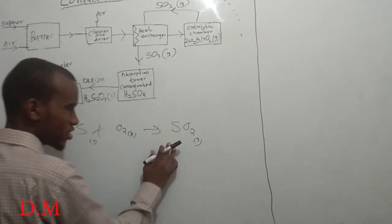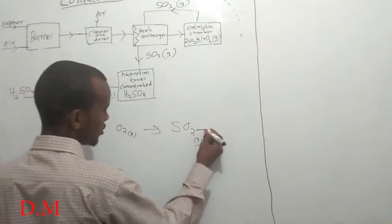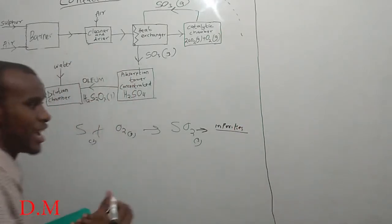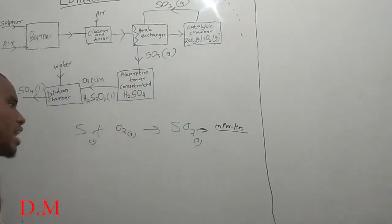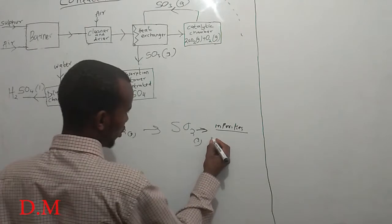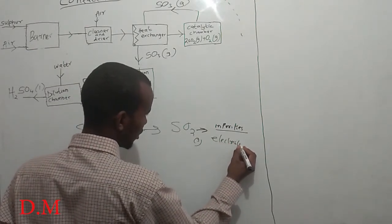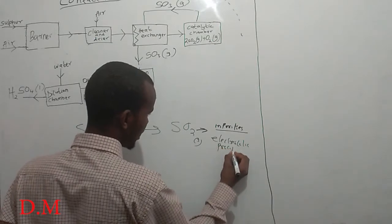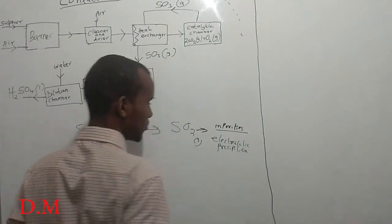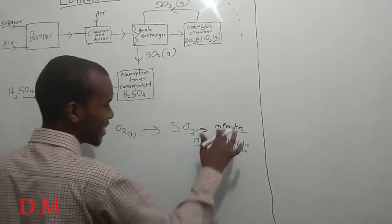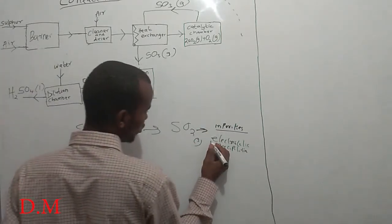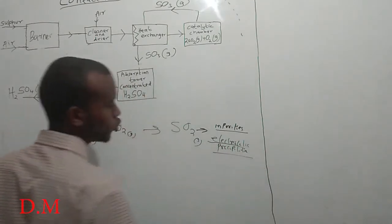This sulfur dioxide contains impurities, and these impurities can harm the catalyst. Therefore, we pass the sulfur dioxide through electrostatic precipitation to remove the impurities, such as dust particles.